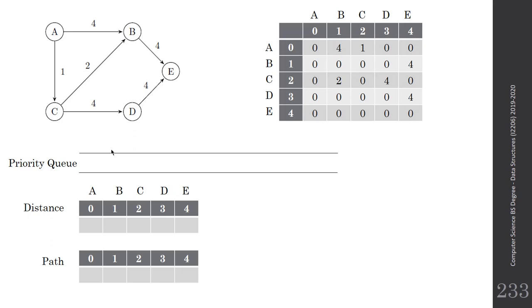At the beginning we will put distance equal to minus one for all vertices. We will start from vertex A, which is index zero, so the distance to A equals zero. We place in the priority queue vertex zero with weight zero. Then we do BFS — we loop over the priority queue, take the front element, which is vertex zero with distance zero.